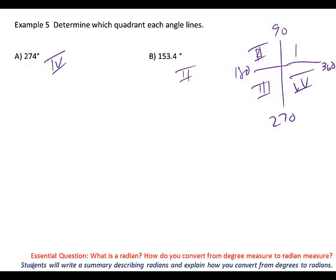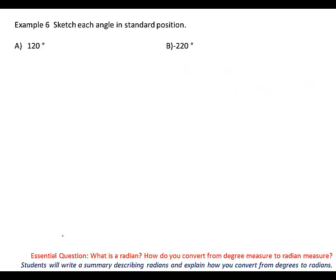Now, we've got to sketch angles in standard position. Sketching the angle in standard position — I'm going to look at my quadrants. I know that this is 90 degrees and this is 180 degrees. So, which quadrant is 120 going to lie in? It's going to lie in 2. I would draw here and then draw this little arc, and if I label it 120, then I know what we're talking about. It doesn't have to be perfectly in between.